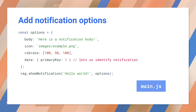Data is the arbitrary data you can retrieve via the service worker when the user interacts with the notification. In this example, the primary key allows you to identify which notification was clicked when handling the interaction in the service worker. Let's try that out.